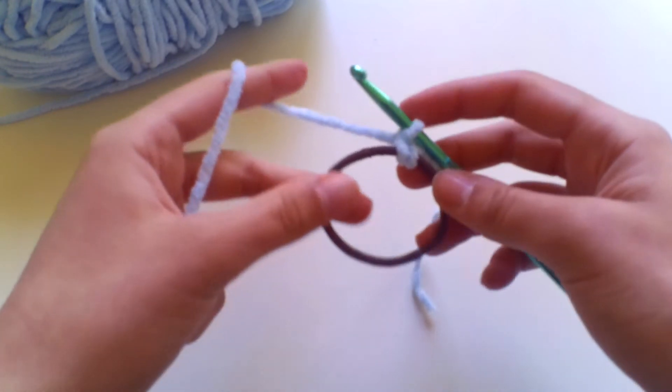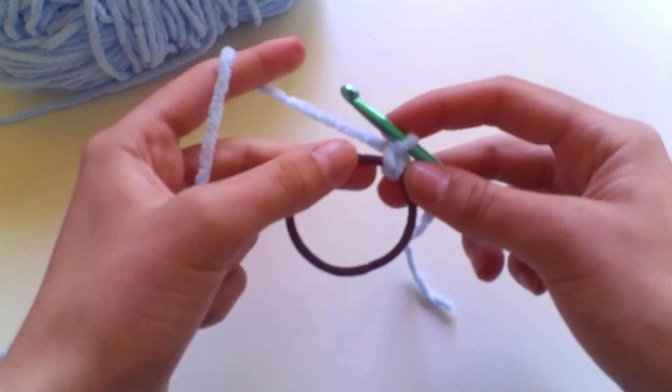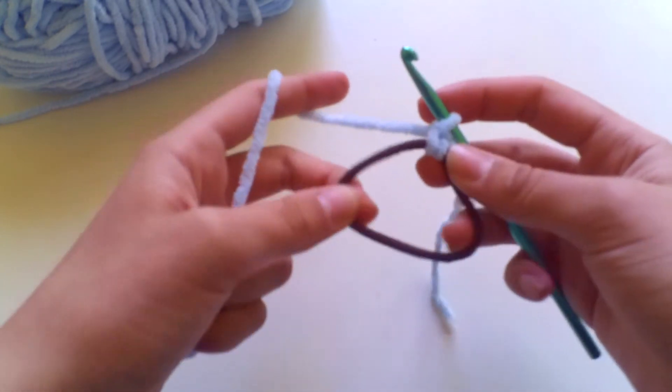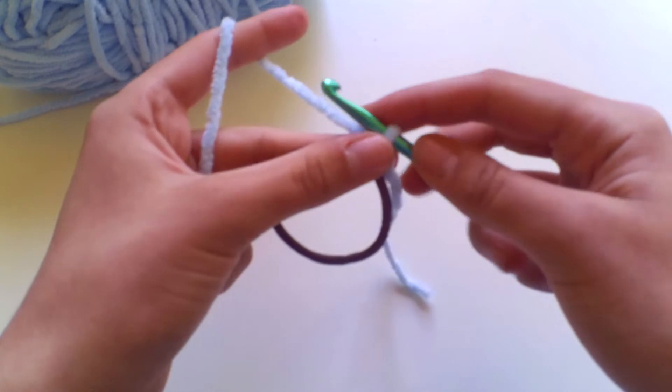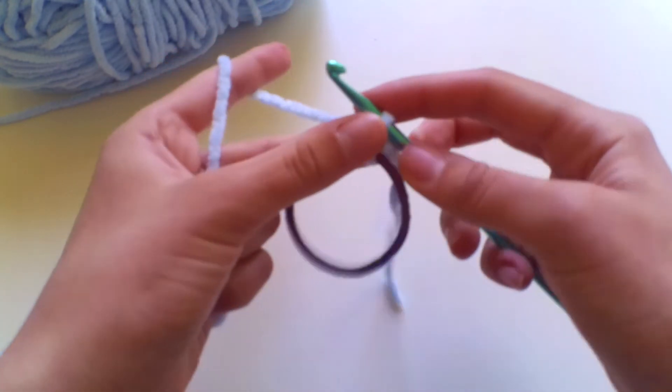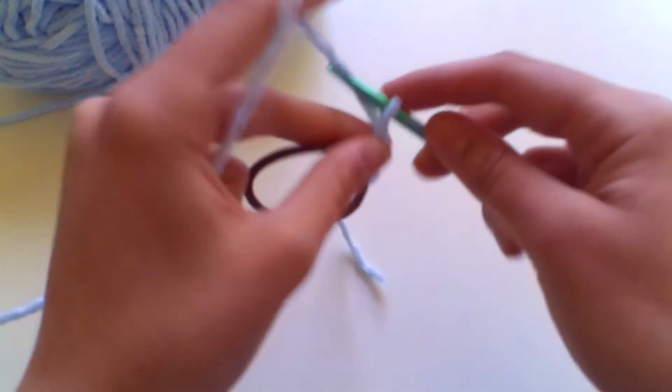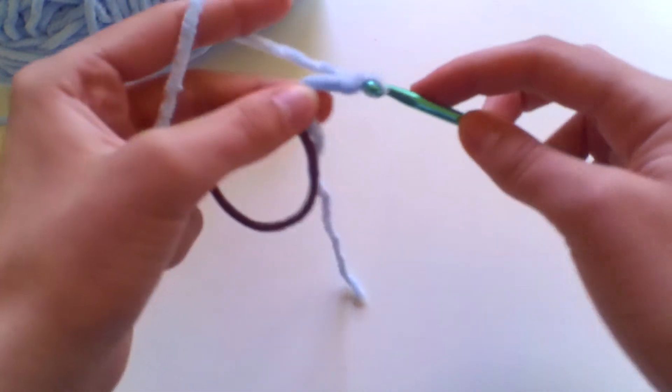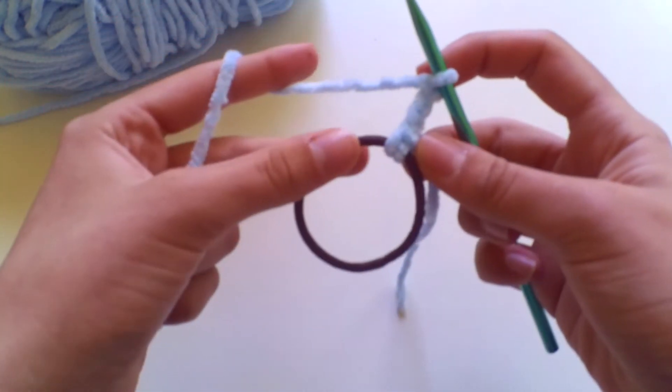So our scrunchie actually consists only of two stitches and they're not even two stitches. It's a chain of three and a treble crochet and you're just going to repeat that all the way along. So all you're going to do is one, two, three chains and then work a treble crochet.